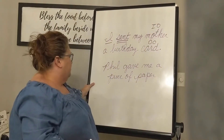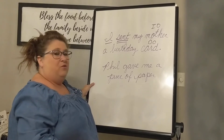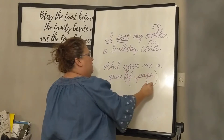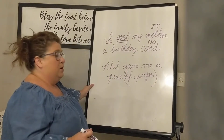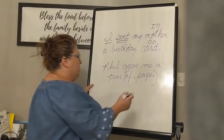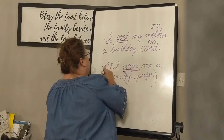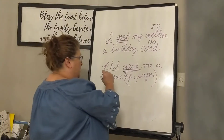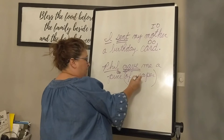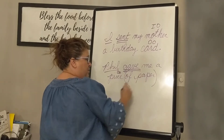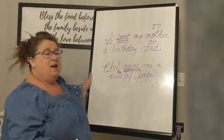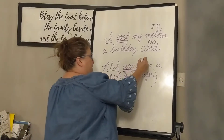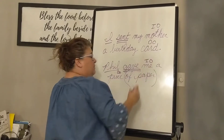Look at the next one: Phil gave me a piece of paper. Prepositional phrase — put it in parentheses. Get it out of the way. Don't even look at it for the rest of our work on this sentence. Gave is our verb. Who or what gave? Phil. Phil gave whom or what? Piece. It can't be paper because paper is the object of that preposition. Phil gave piece to whom or for whom? And our indirect object would be me.